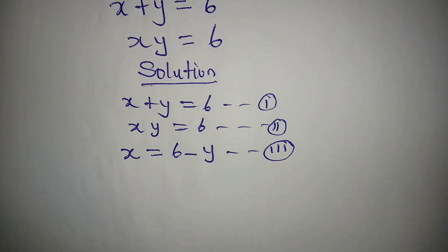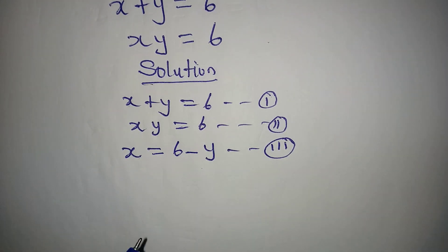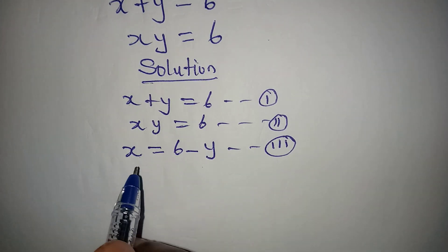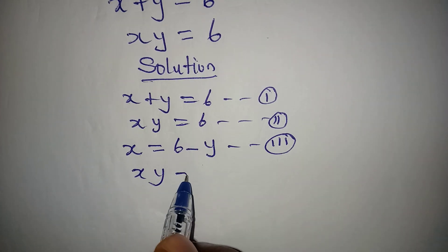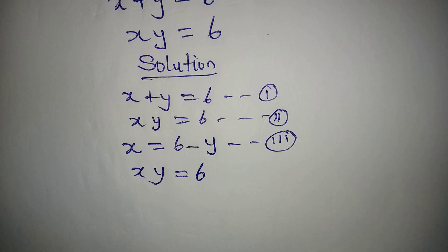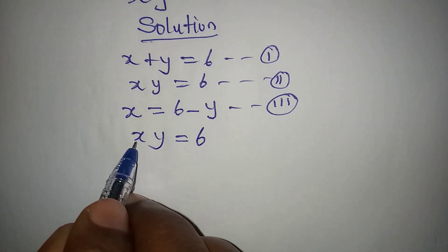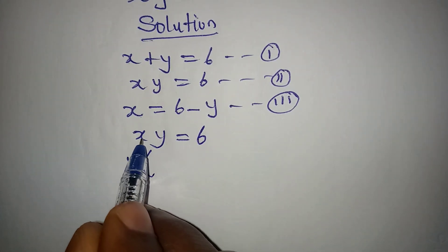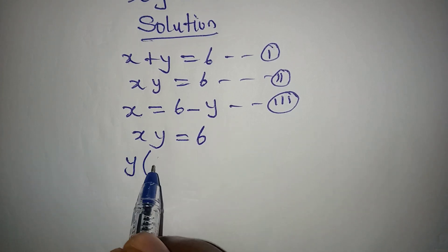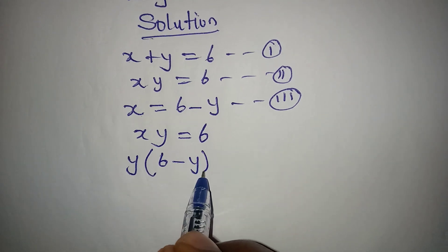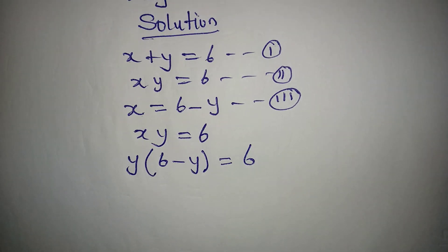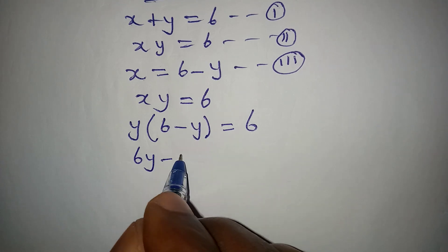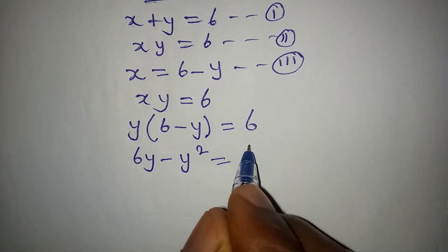The next thing is to put equation 3 into equation 2, because it is equation 1 that gave us equation 3, so it will go into equation 2. Equation 2 is x times y equals 6. Our x is 6 minus y, so in place of x I will write (6 minus y) times y, and this equals 6. Opening the bracket, we have 6y minus y squared, and this is equal to 6.